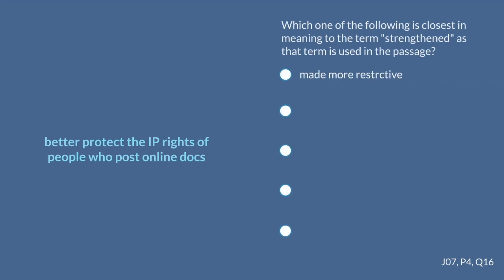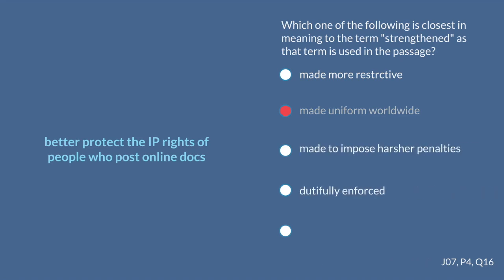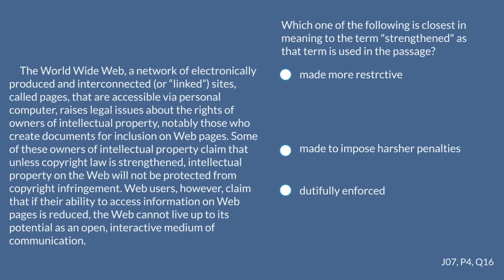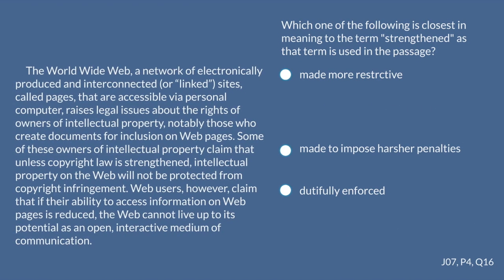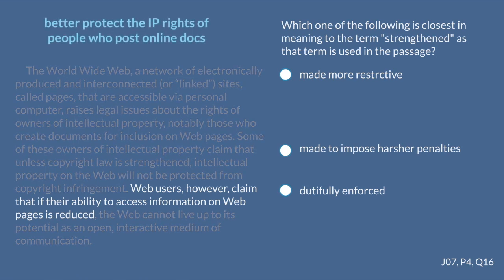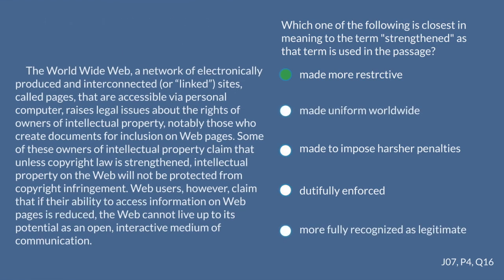The previous sentence says the internet is raising legal issues for people that post their documents — their intellectual property rights are in question. They're saying if you don't strengthen copyright law, documents aren't protected from infringement. So strengthening copyright law means to better protect their documents from being infringed on. If copyright law is made more restrictive, it better protects their rights. If it's made the same worldwide, that doesn't improve protection. Harsher penalties, better enforced — that could better protect rights. The sentence after says web users want to reduce ability to access information. Which answer sounds most like reducing access? More restrictions — thus A is our correct answer.